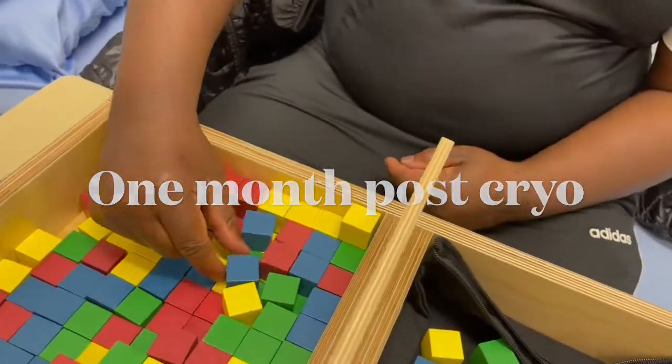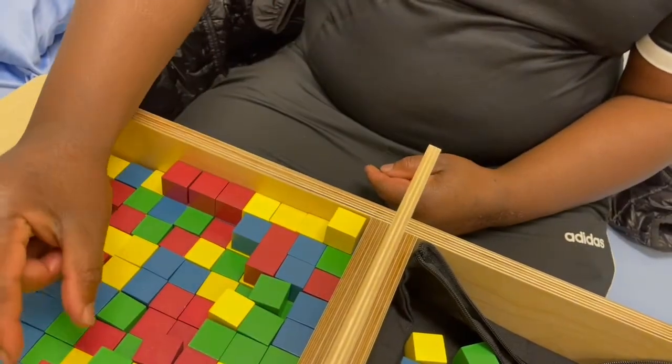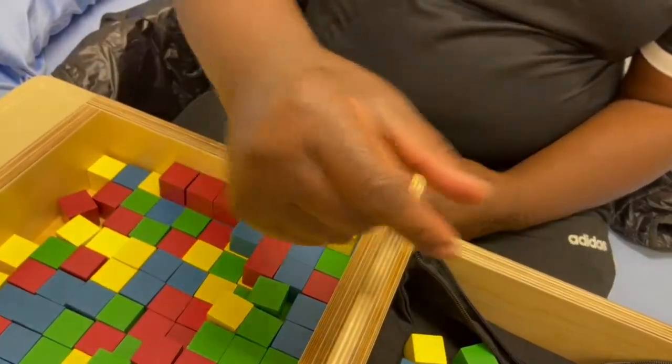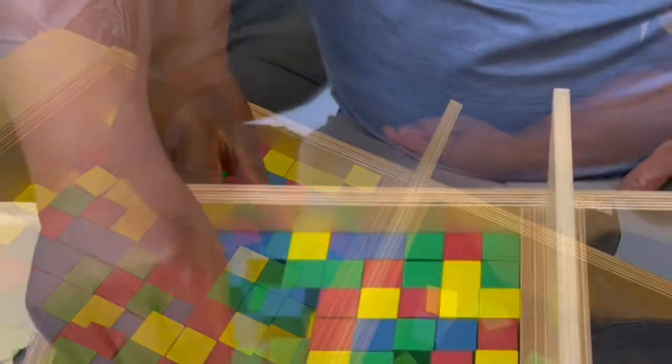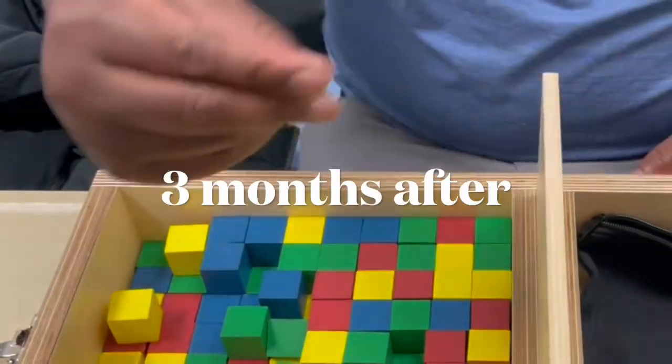One month after the procedure you can see he's starting to get better dexterity with the box and block test. Interestingly, he's tending to use that first and second fingers, which is using a lot of median function, but he's learning and practicing the hand.